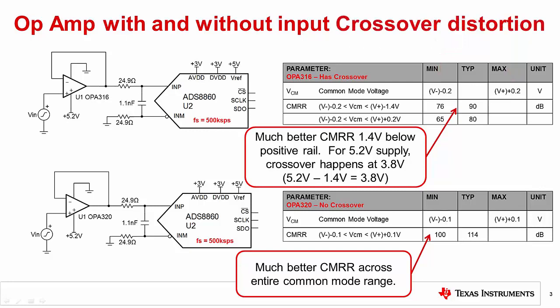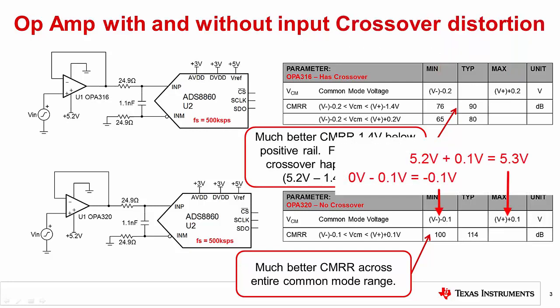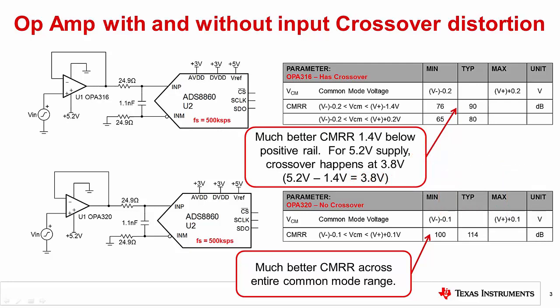In this example, the supply rails are ground and 5.2 volts, so the common mode range for the OPA316 is minus 0.2 volts to 5.4 volts. The OPA320 common mode range can be calculated similarly to be minus 0.1 volts to 5.3 volts. Now let's look at the common mode rejection specification. Although both devices are rail-to-rail, the common mode rejection specification for the OPA316 is broken into two ranges. The first range is 1.4 volts below the positive rail, and that restricted range has 10 dB better performance than the full rail-to-rail range. On the other hand, the OPA320 lists only one common mode rejection specification, and the specified rejection is quite good — greater than 100 dB.